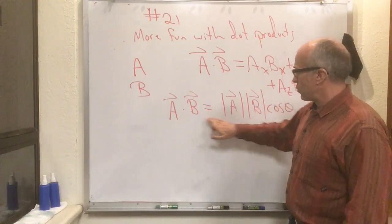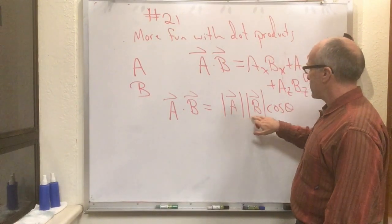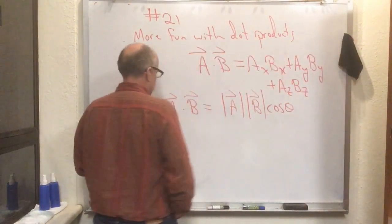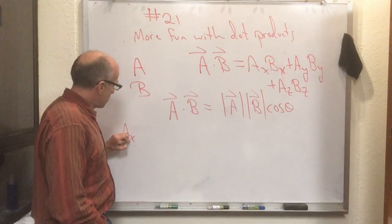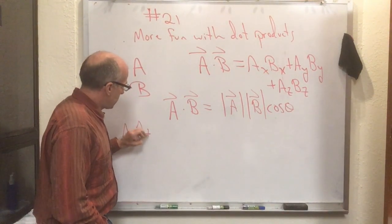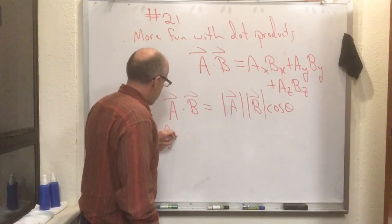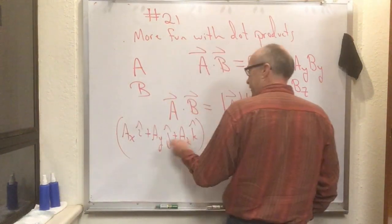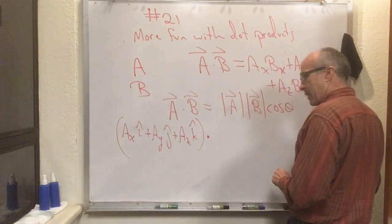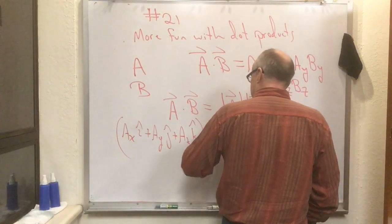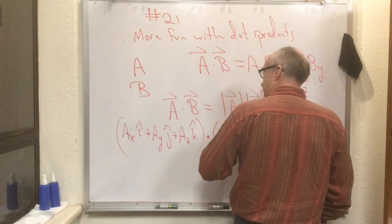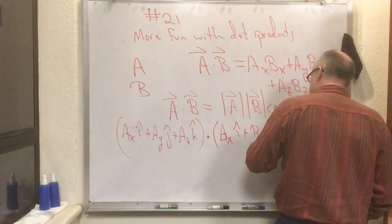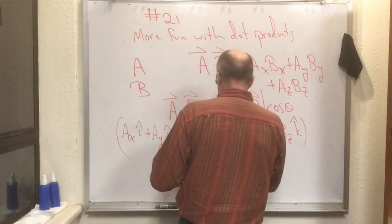Let's suppose that this is true — that a dot b equals the length of a times the length of b times cosine theta. Now let's write a as ax times i-hat plus ay times j-hat plus az times k-hat, and dot that into b, which I'll write as bx times i-hat plus by times j-hat plus bz times k-hat.